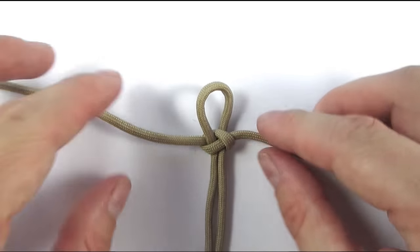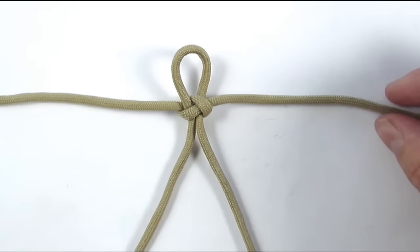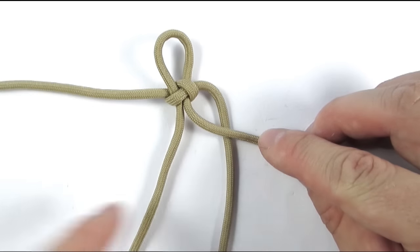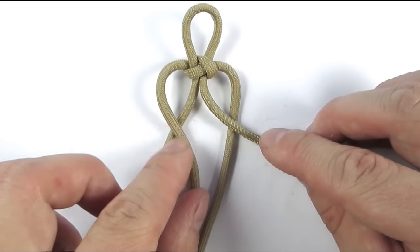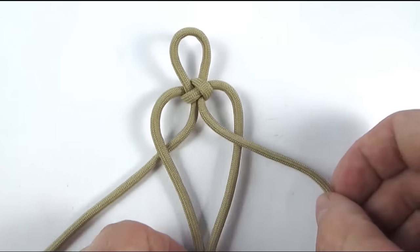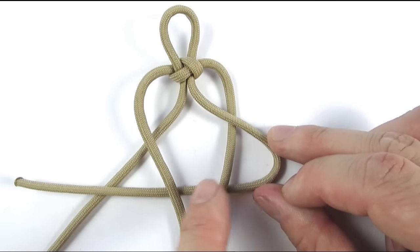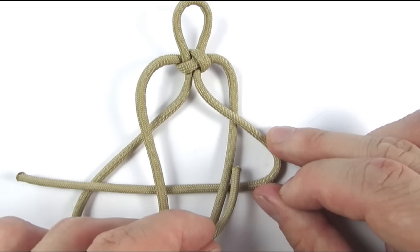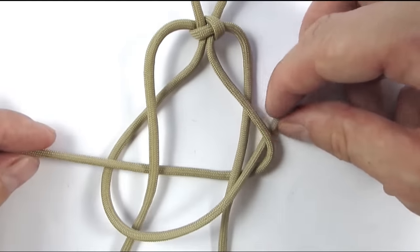We're now going to start tying vertical crown knots, which are done by first taking our right cord and placing it under the middle cord on the right. Then with the left, going over the left middle cord. Then we're going to take our right cord and basically just tie a cobra knot like we did before. And this gives us our first vertical crown knot.